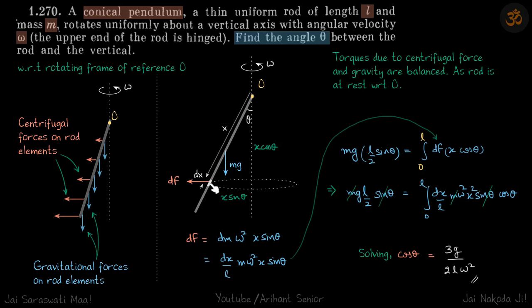df due to the centrifugal force with respect to the rotating frame is dm times a, where a will be omega squared x sine theta, because it's turning in a radius of x sine theta. This is x, this is x sine theta, this is x cos theta. dm we can write as dx/l times m, so this is df.